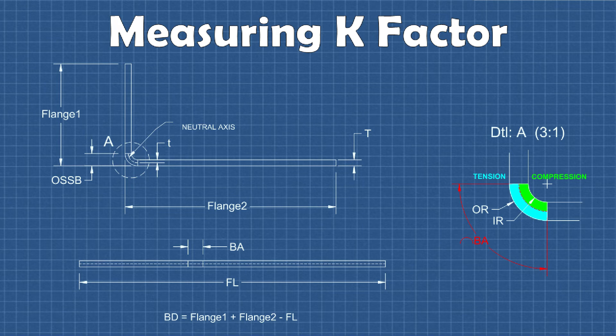So another measure used to determine the relationship between flat and bent part sizes is the bend deduction. This can more easily be measured, especially for 90 degree bends. For a 90 degree bend, it is simply the difference of the sum of the flange lengths after forming and the flat length before forming.